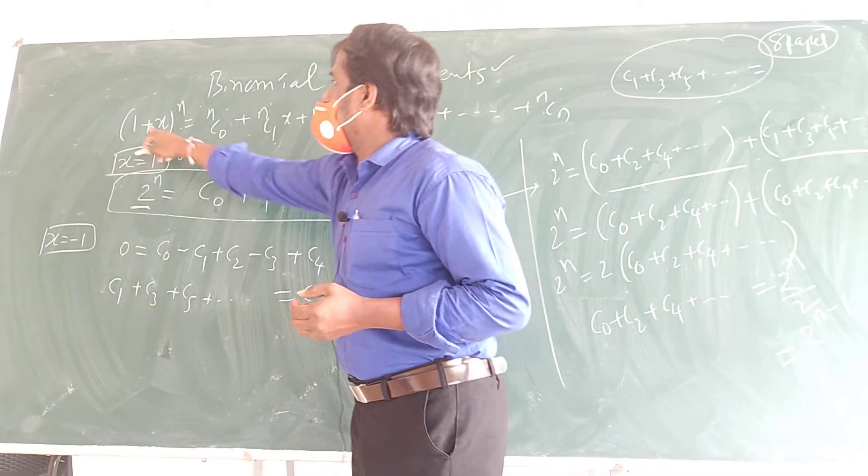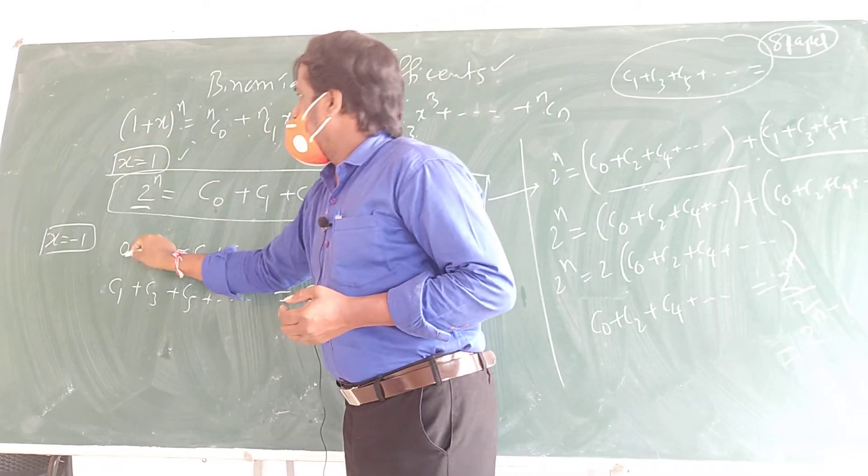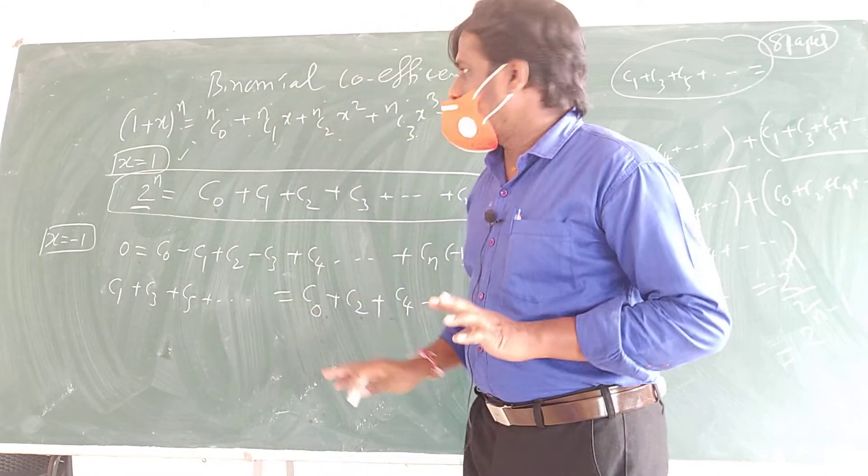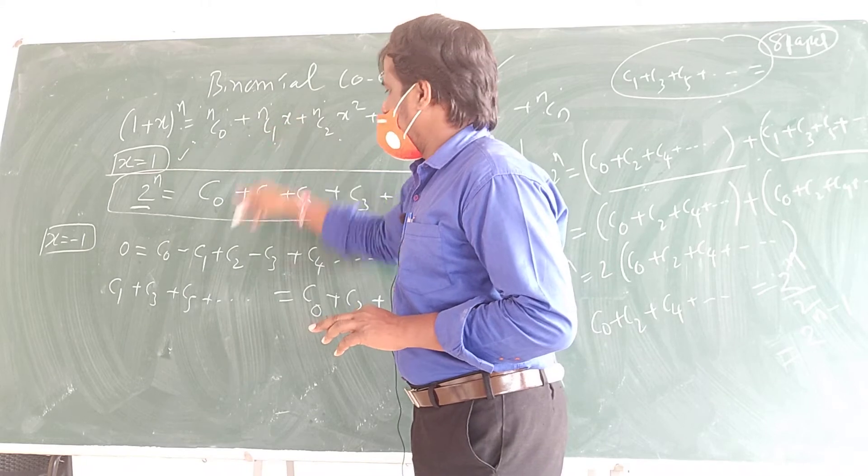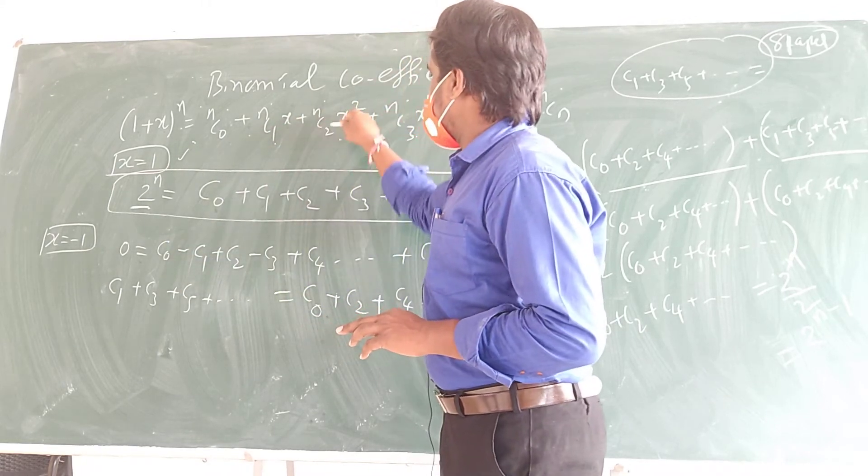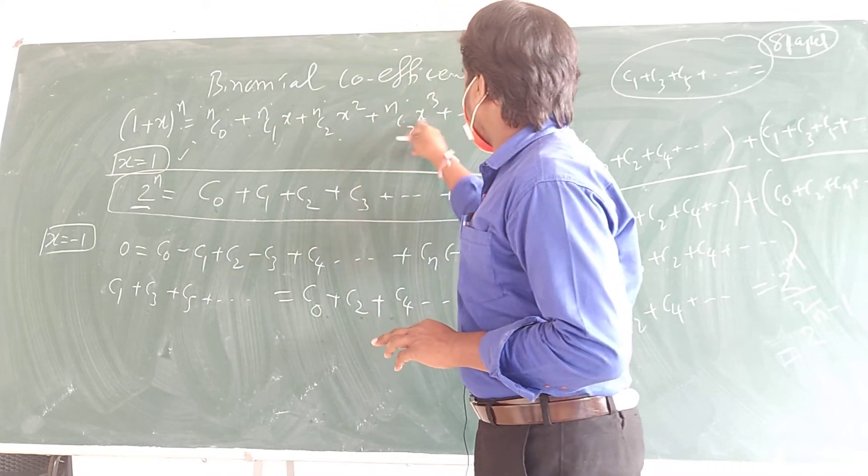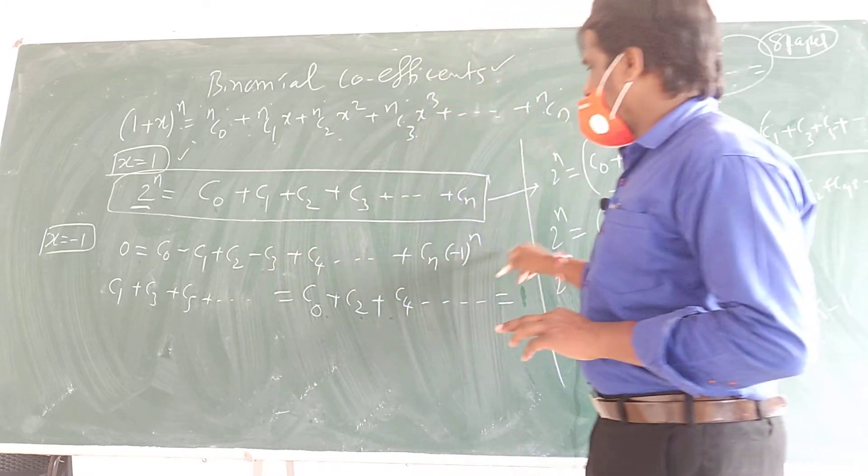If I substitute x = -1, 1 - 1 will be 0, and 0 power anything is 0. And here I will get C0, and here is -1, so -C1, here is +C2, and here you get -C3, and so on.